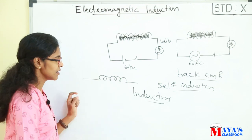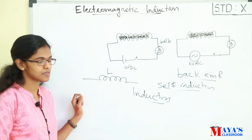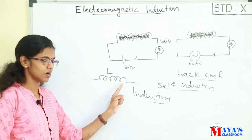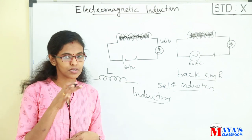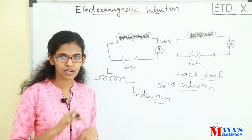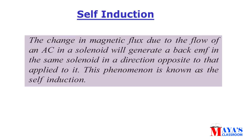An inductor is represented by the symbol L and is essentially a coil. Inductors are used to oppose changes in current but they are not resistors — they do not cause power loss. Self-induction: the change in magnetic flux due to the flow of AC in a solenoid generates a back EMF in the same solenoid, in a direction opposite to the applied voltage. This phenomenon is known as self-induction.